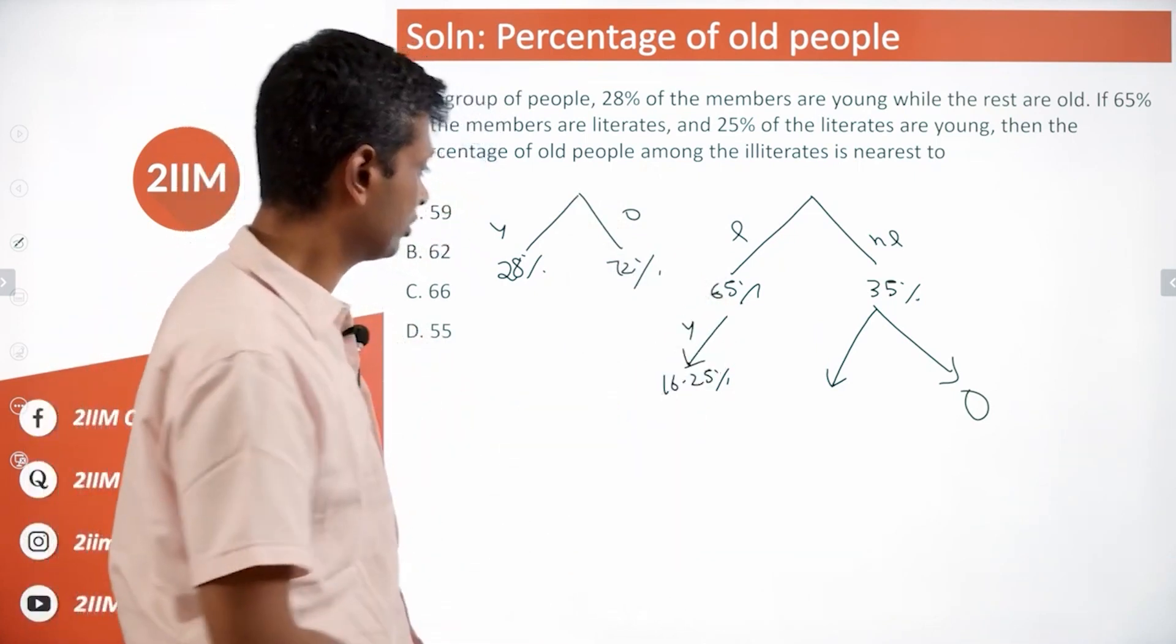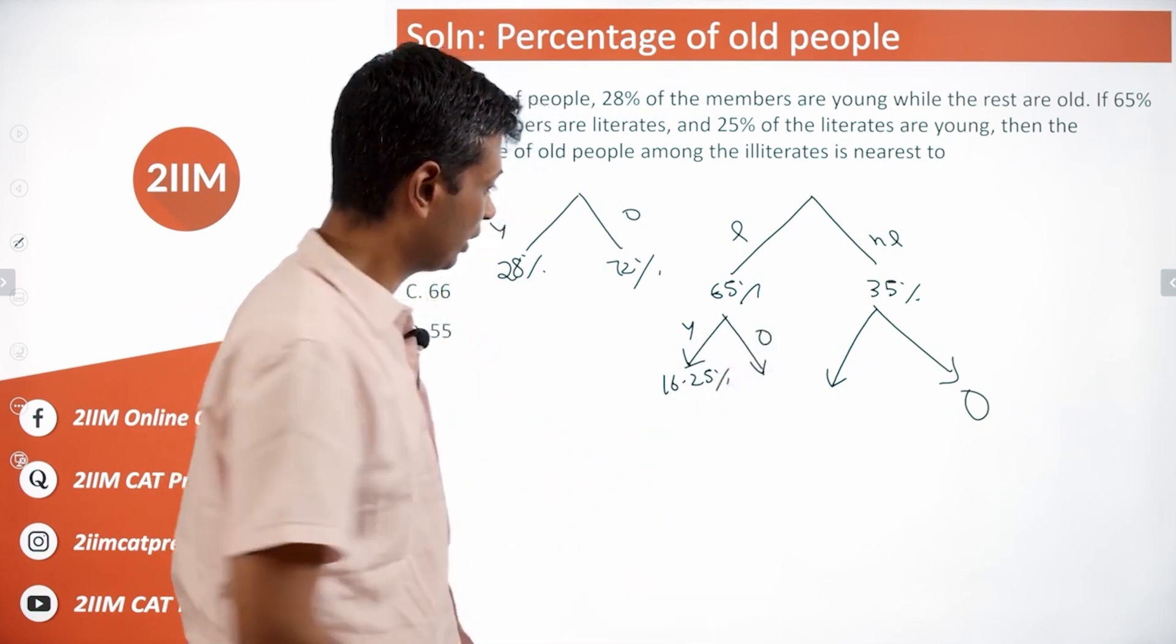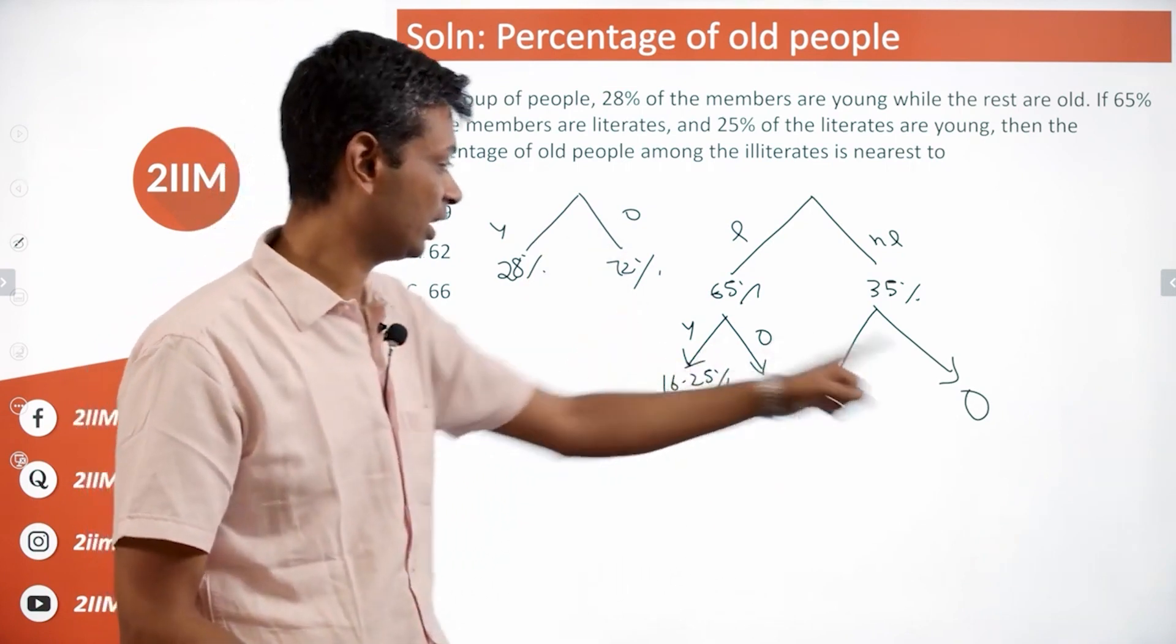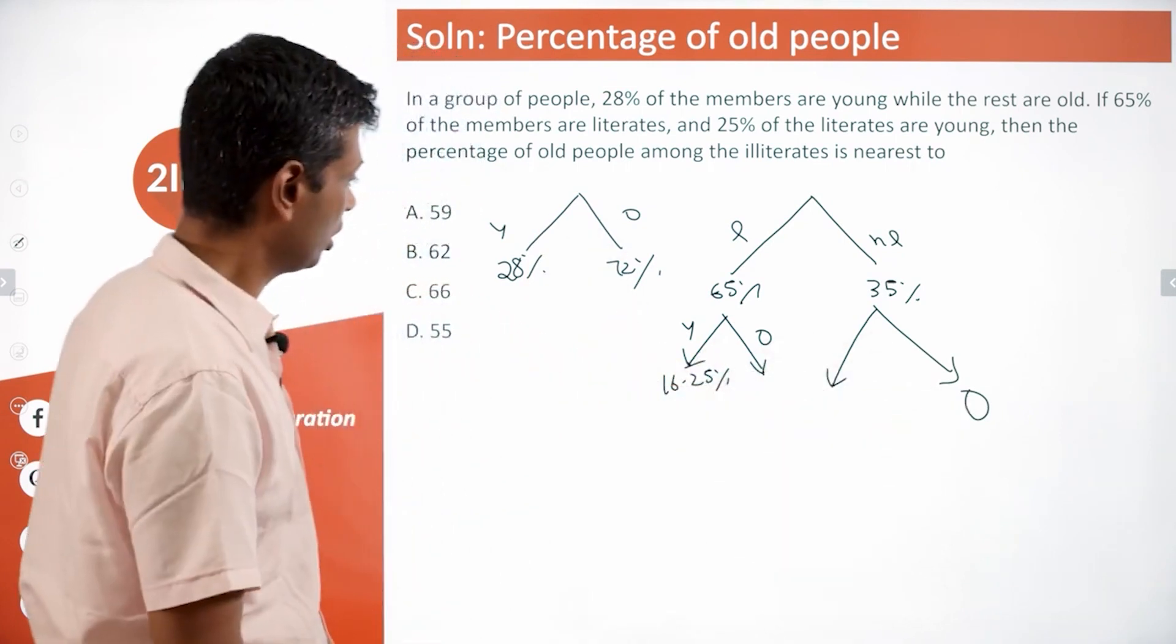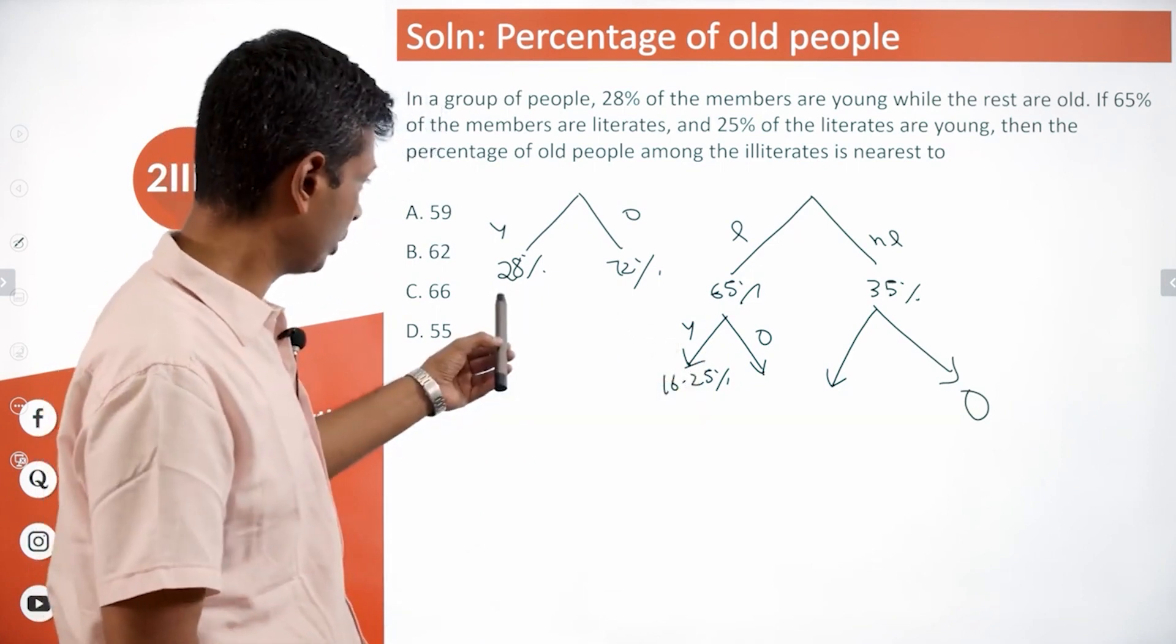Out of 65 percent, 16.25 percent are young, the remaining are old. We can find the old here, put that here, find the not literate and simplify. Or conversely, among the young people 16.25 percent are literate.